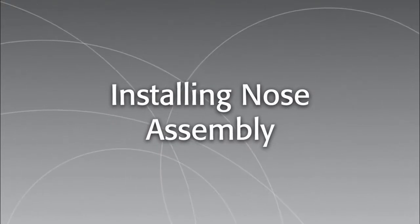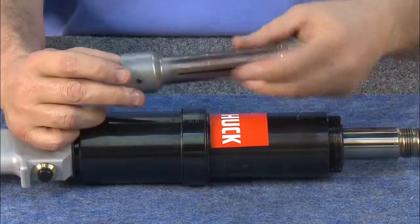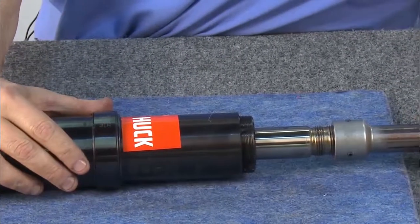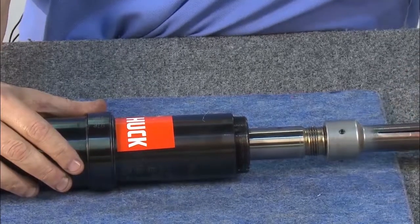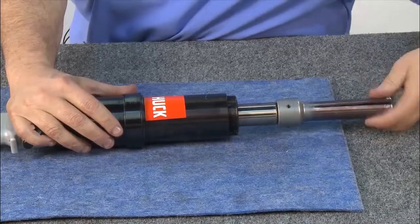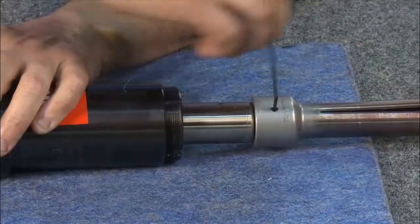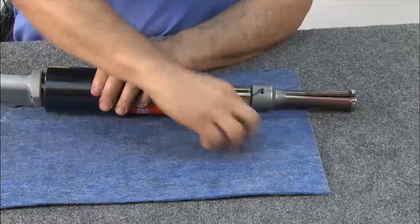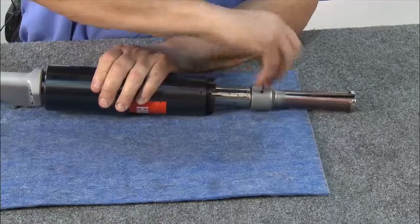To install the nose for bobtail installation, thread the bobtail puller onto the piston until it bottoms out. Then, lock it in place with three lock screws. Tighten the lock screws in place with an Allen wrench.